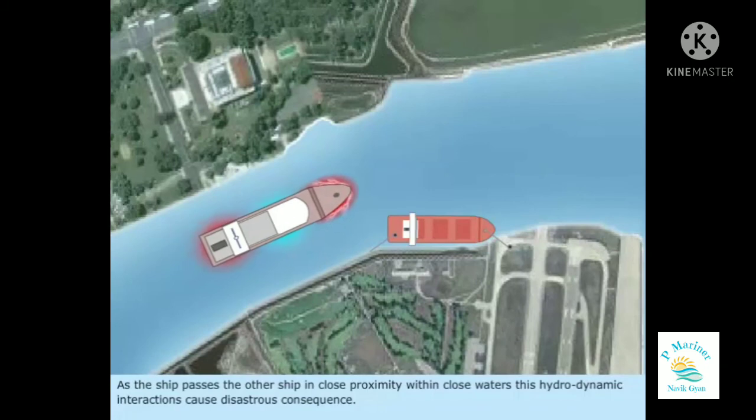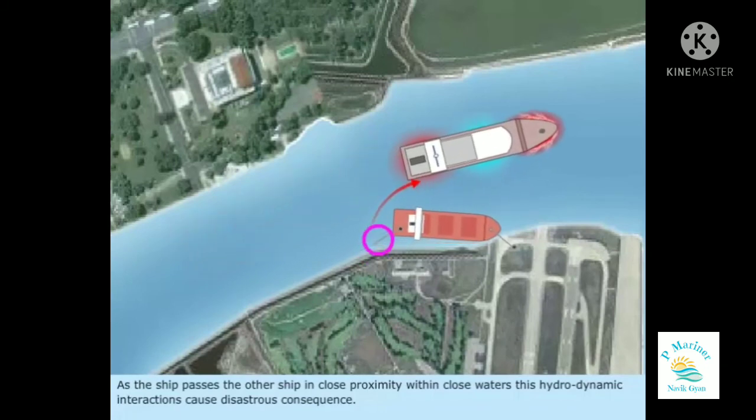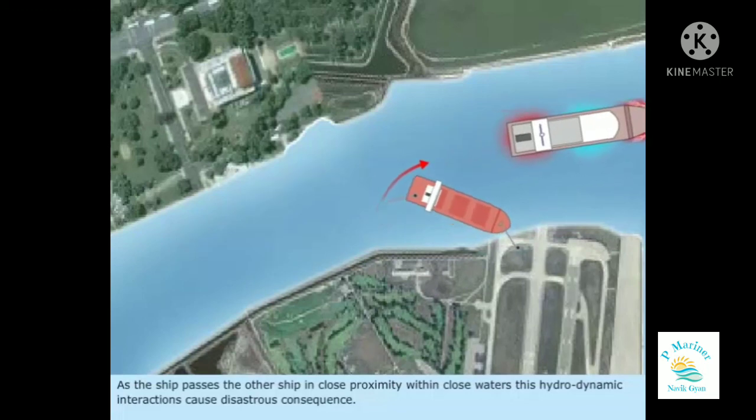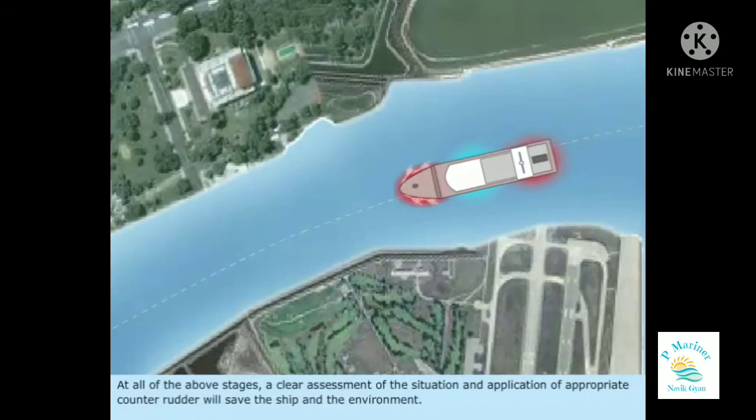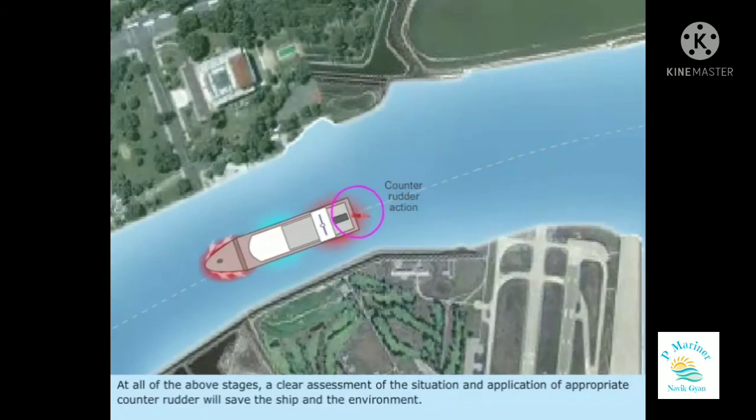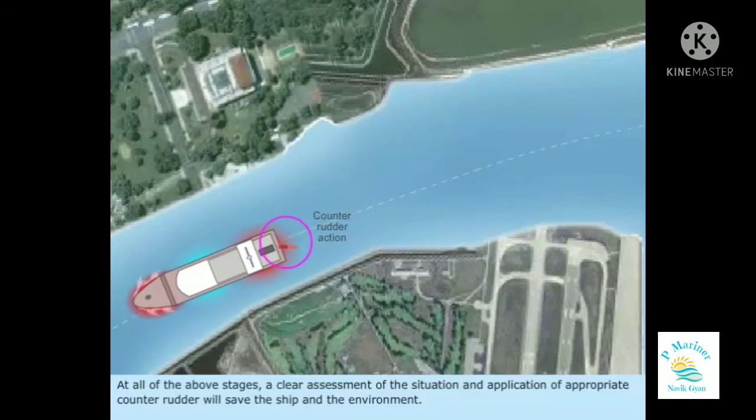As the ship passes the other ship in close proximity within close waters, these hydrodynamic interactions cause disastrous consequences. At all of the above stages, a clear assessment of the situation and application of appropriate counter rudder will save the ship and the environment.